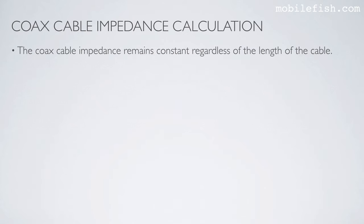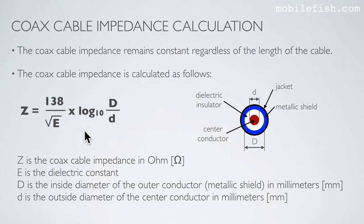The coax cable impedance remains constant regardless of the length of the cable. The coax cable impedance can be calculated using this equation. Z is the coax cable impedance in ohms. E is the dielectric constant. D is the inside diameter of the outer conductor, which is the metallic shield, in millimeters. And the small letter d is the outside diameter of the center conductor in millimeters.